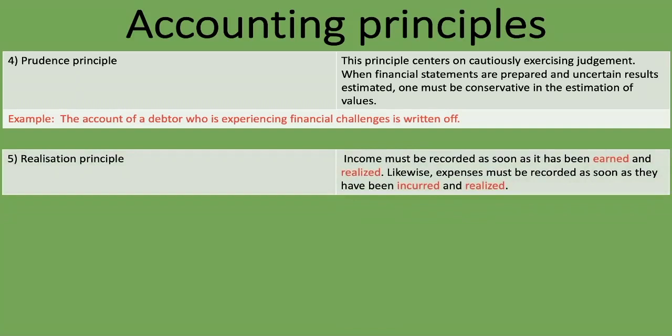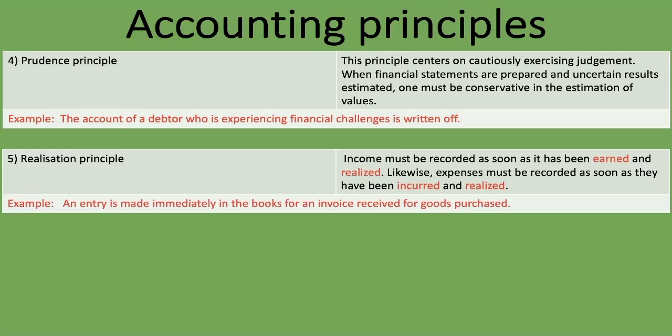The fifth principle is the realization principle: income must be recorded as soon as it has been earned and realized, and expenses must be recorded as soon as they have been incurred and realized. 'Realized' means, for income, that the products have actually been delivered to the customer. For expenses, the service provider must have delivered the service. An example: an entry is made immediately in the books for an invoice received for goods purchased, once those goods have been received.